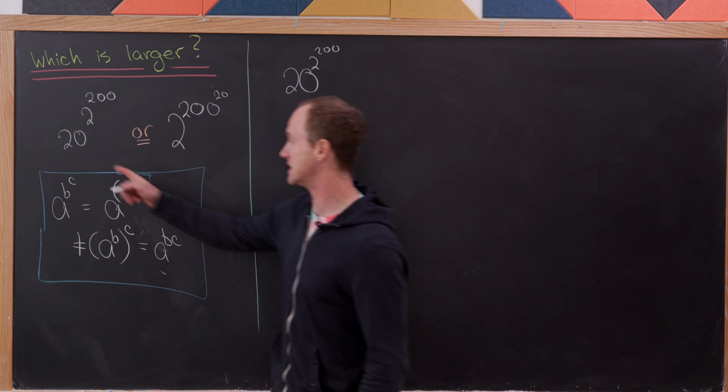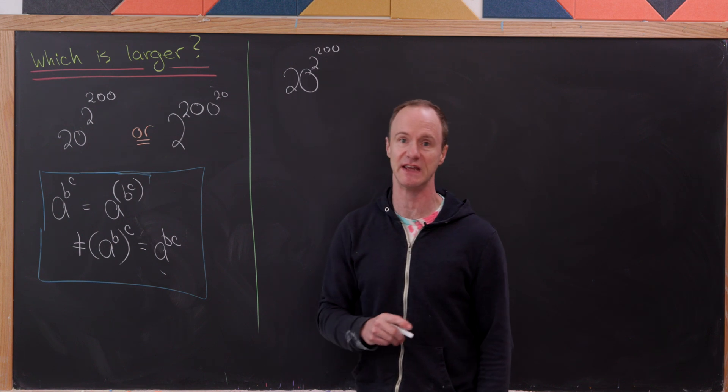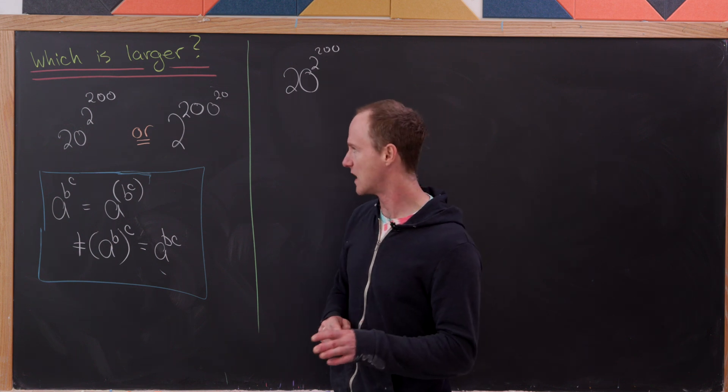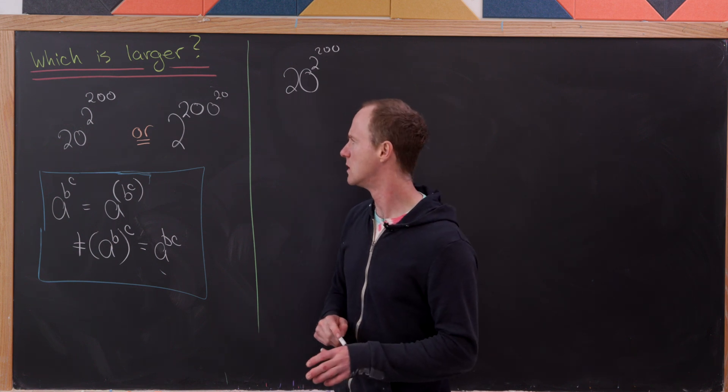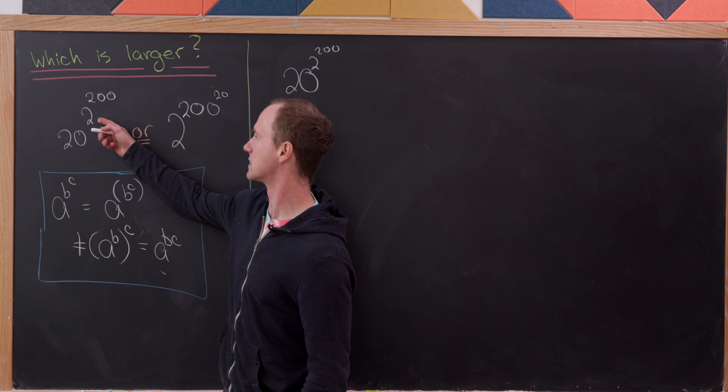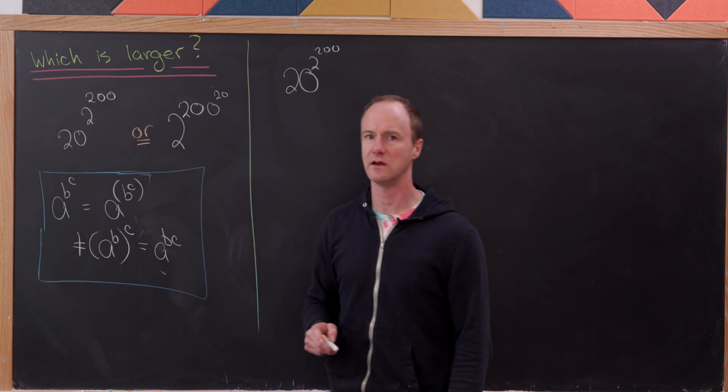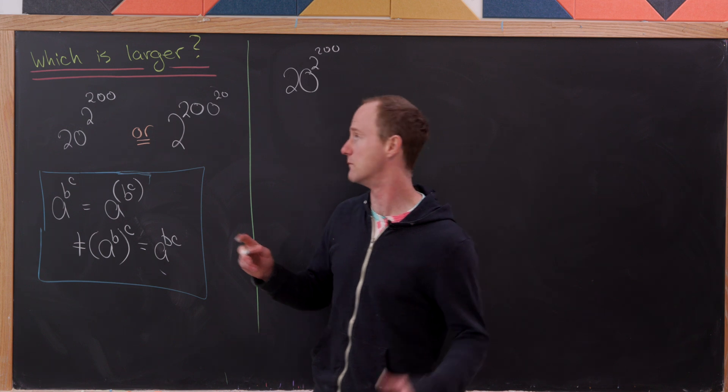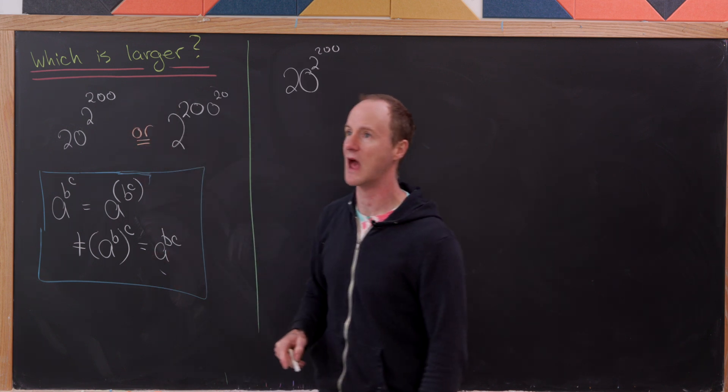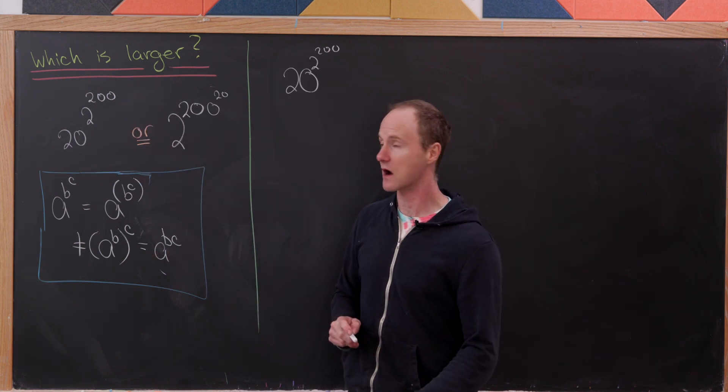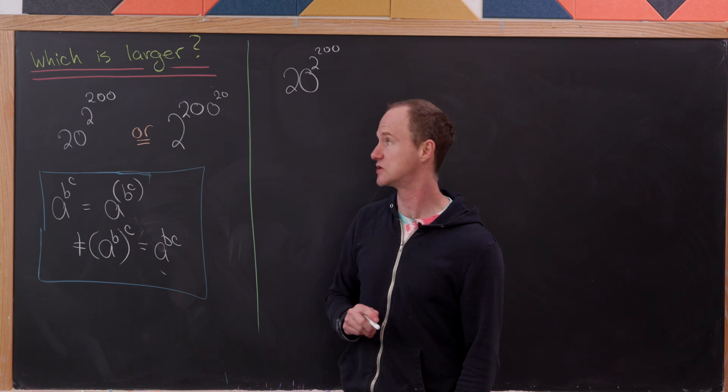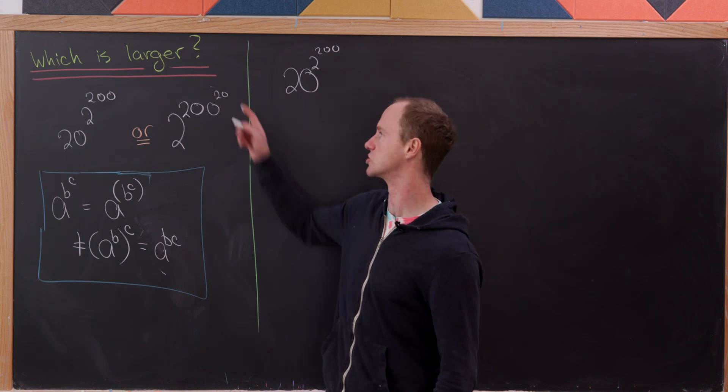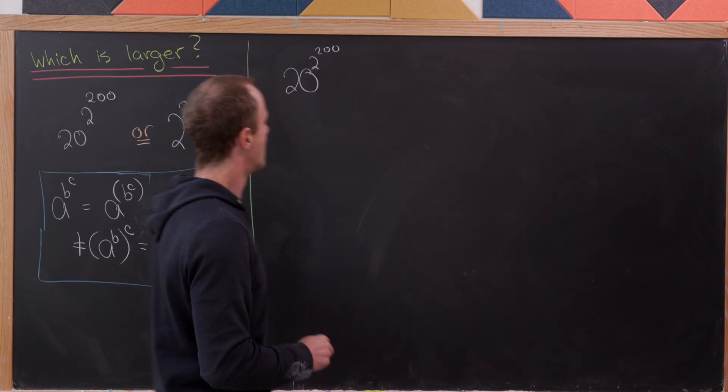So my guess is that in fact this one on the left is larger. And that's because even though it's got a smaller middle number right here, the number that influences the size of this type of object the most is the one at the peak of the power tower. And there, the peak of the power tower is 200, which is obviously larger than 20 right here.